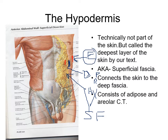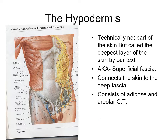When dissecting a person you do a very light scoring cut, then get the back of your scalpel underneath and pull it away from the body wall — you can separate the skin very easily. The hypodermis is technically not part of the skin but is listed as the deeper layer. It's also known as the superficial fascia, connecting the skin to the deep fascia, and consists of adipose and loose areolar connective tissue.